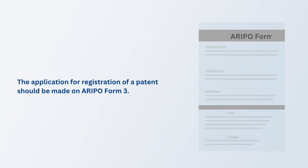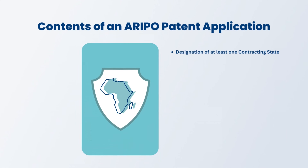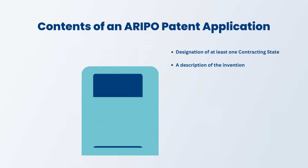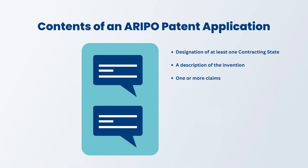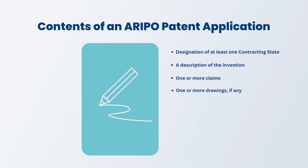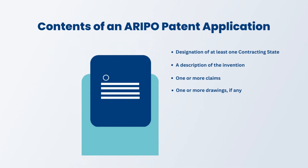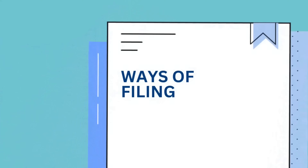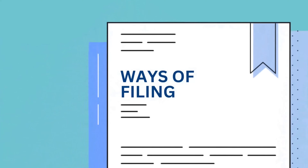The application for registration of a patent should be made on ARIPO Form 3 and must contain the following: designation of at least one contracting state, a description of the invention, one or more claims, one or more drawings if any, an abstract, and prescribed application fees or a written undertaking to lodge the fees. Applications can be filed directly at ARIPO through the following ways: